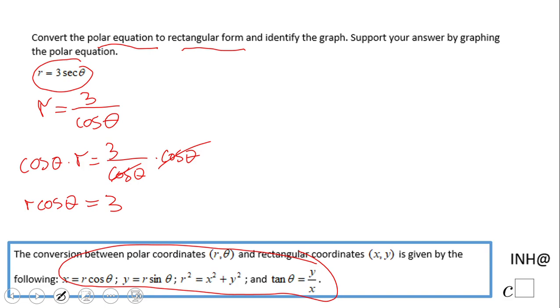If we take a look down here one more time, we notice r cosine of theta is x. So in fact what we have here is x equals 3, because this is nothing other than x.